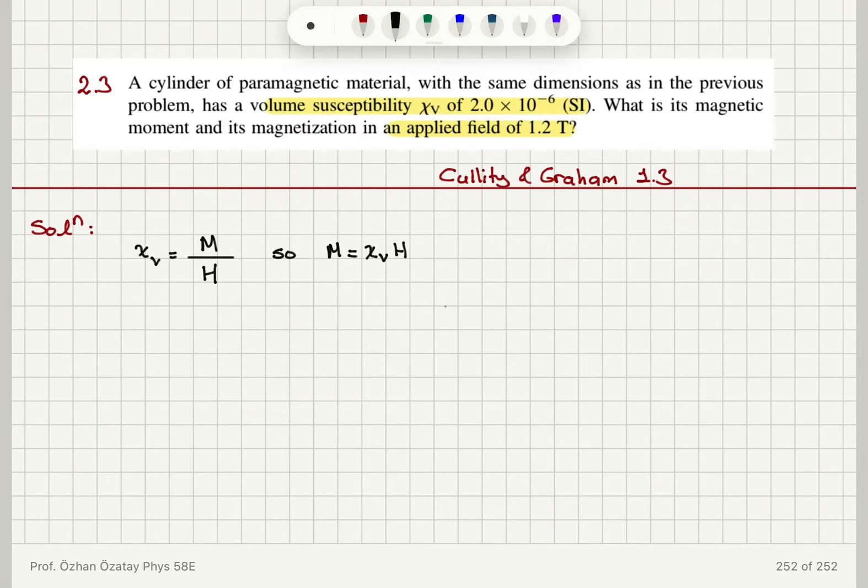At the same time, we have the constitutive relation between B, M, and H. B is equal to μ₀(M+H), this is in SI units. So therefore we can substitute for B: μ₀ times volume susceptibility times H plus H.